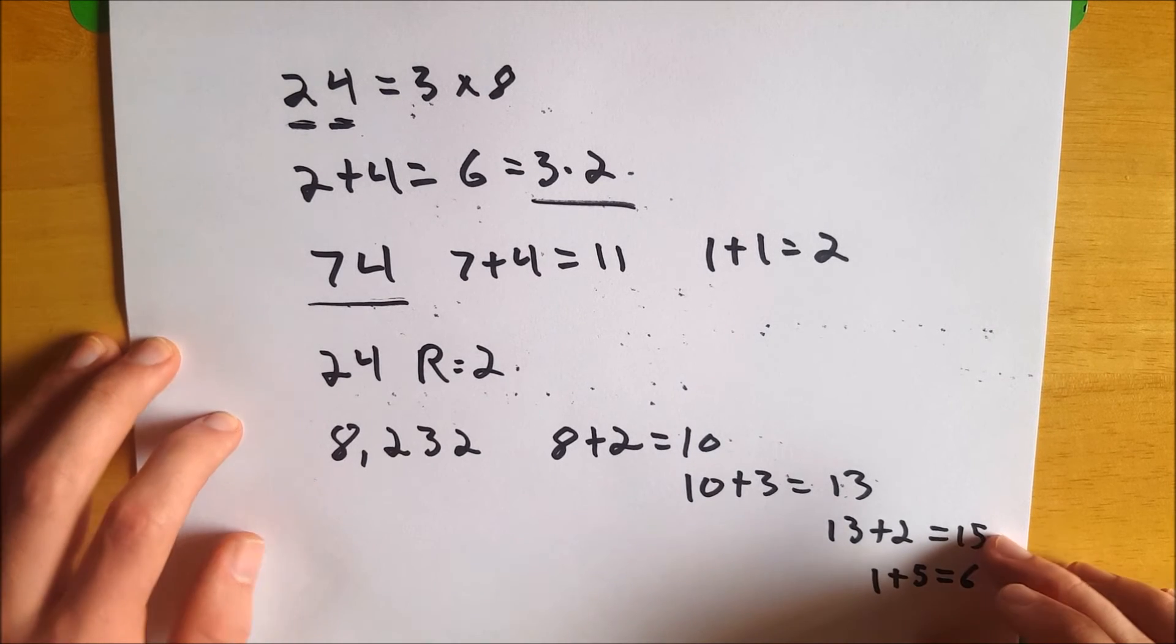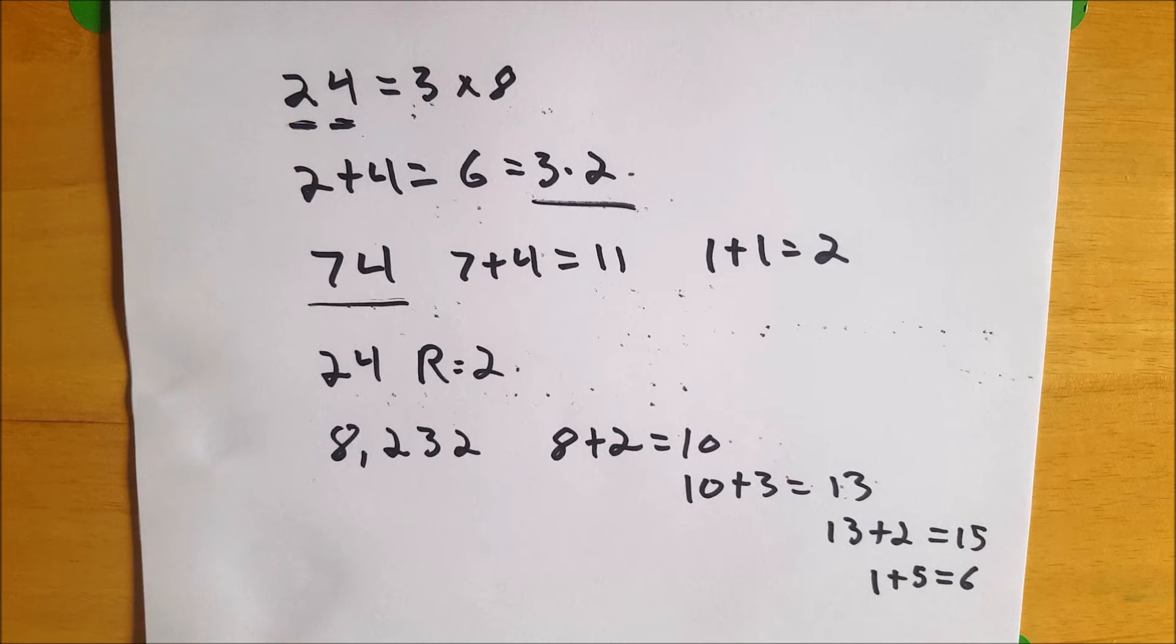So I hope that video helped explain how you can figure out if a number is divisible by 3. Very easy. Also, when you're adding up these digits, once I got to the end, I had 15. Instead of adding 5 plus 1 to get 6, I could also just recognize that 15 is divisible by 3. Therefore, my original number is also divisible by 3.